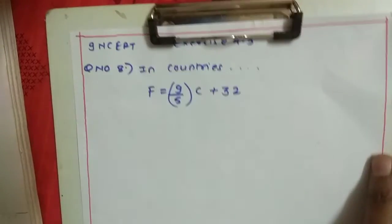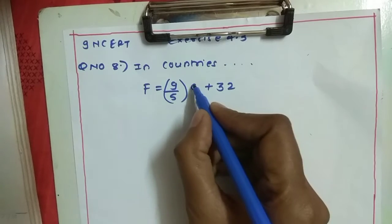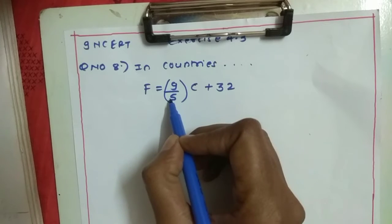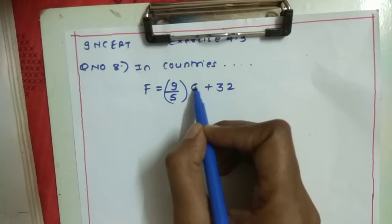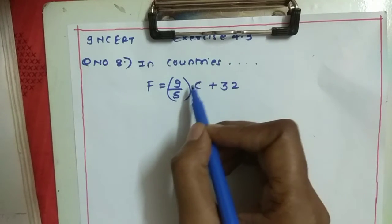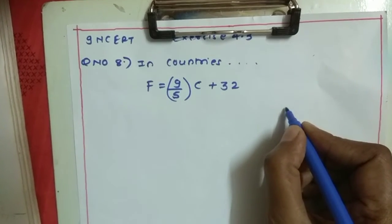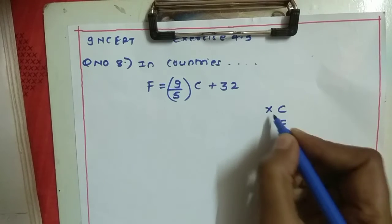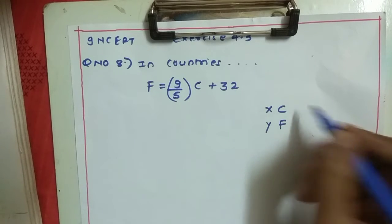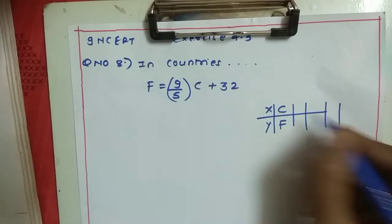This is the equation given. We can put any Celsius value here — temperature can even be negative. But to make the calculation easy, notice that in the denominator we have 5. So we can divide with C. Try to put C as a multiple of 5 so that the division is complete with no remainder. We will make a table with C and F. We take Celsius on the x-axis and Fahrenheit on the y-axis. You can put C as 0 also, but I will take other values — at least 3.